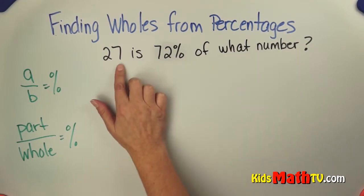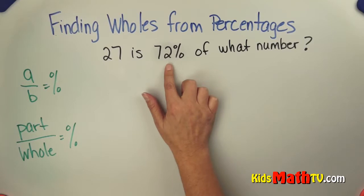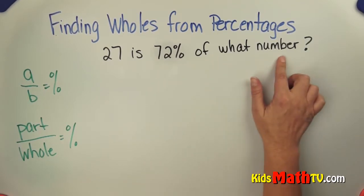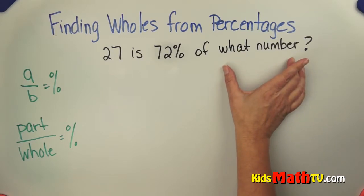This is like you got 27 correct on a test and you got 72%, and you want to know how many problems were on the test. What was the whole number of test items?